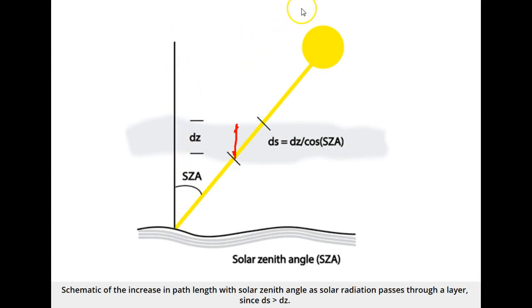However, as the Sun is at higher solar zenith angles, where the solar zenith angle is the angle from the vertical, then the path length through the layer increases, so we would expect more absorption.